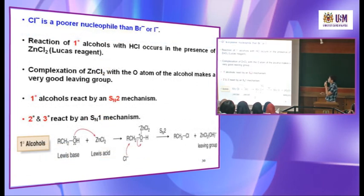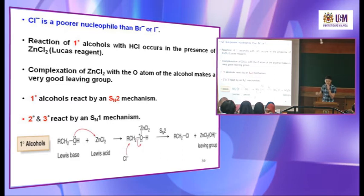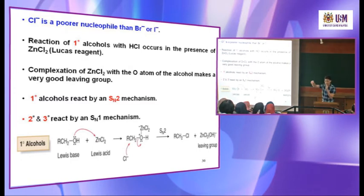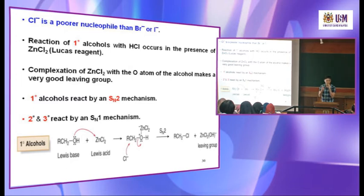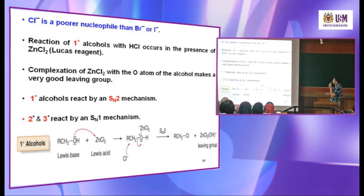Chloride is a poorer nucleophile than bromide or iodide. Nucleophilicity increases going down the group, so bromide is a stronger nucleophile than chloride. Chloride is more electronegative and smaller in size, making it a poorer nucleophile. Because chloride is a poorer nucleophile, the reaction is faster when you use zinc chloride. Reaction of primary alcohol with HCl occurs in the presence of the Lucas reagent — zinc chloride is the Lucas reagent.